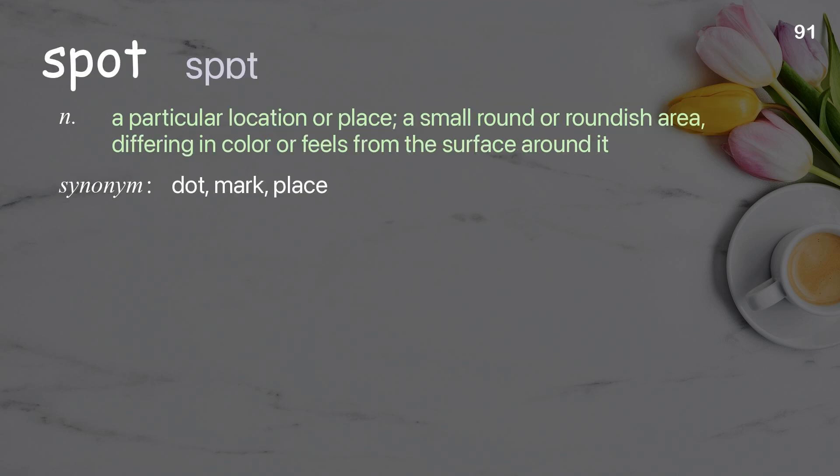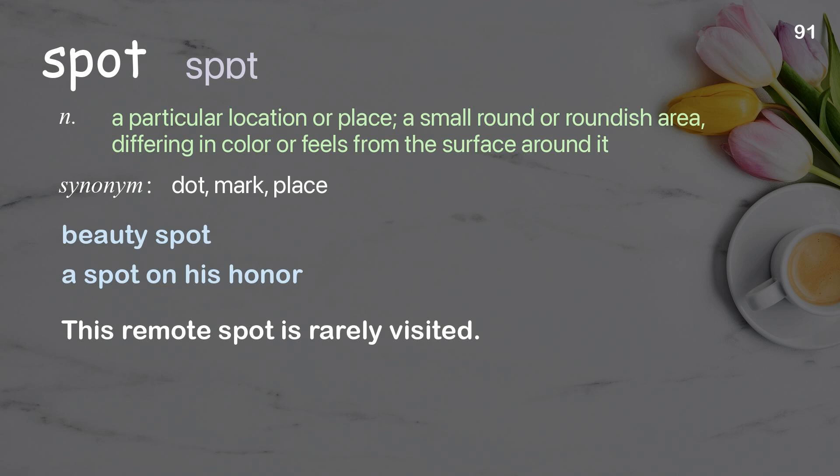Spot: A particular location or place; a small round or roundish area differing in color or feel from the surface around it. Examples: Beauty spot. A spot on his honor. This remote spot is rarely visited.